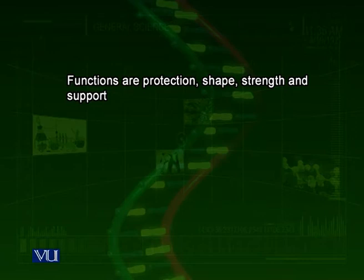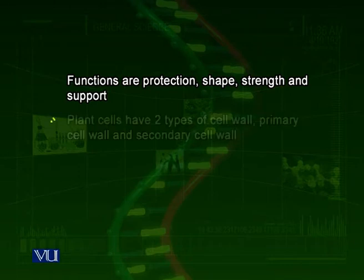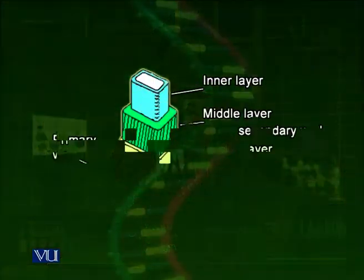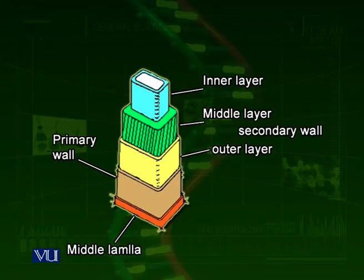What are the functions of the cell wall? Functions of the cell wall are protection, strength and support. Plant cells have these two types of cell walls. The primary cell wall gives them support, and the secondary cell wall gives them even more support. The primary cell wall and secondary cell wall are different in their structure. Here in the next diagram you can see that the outermost layer is the primary cell wall.